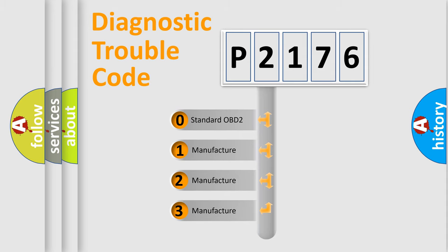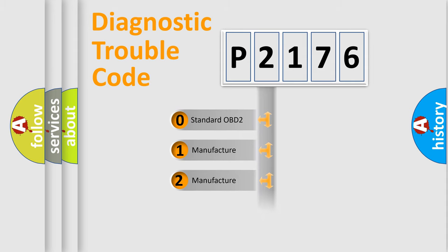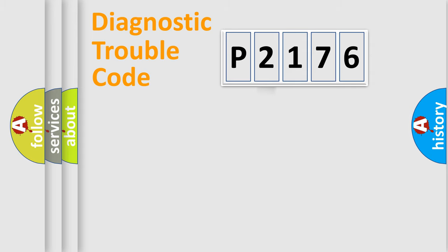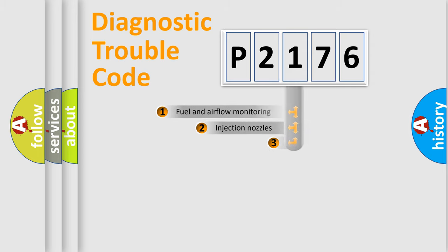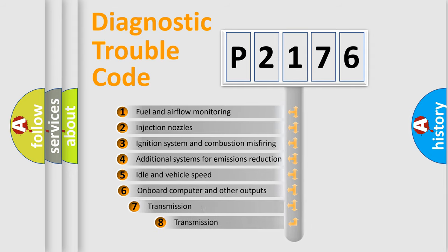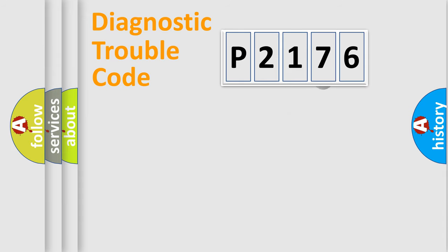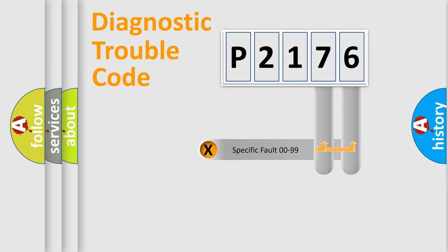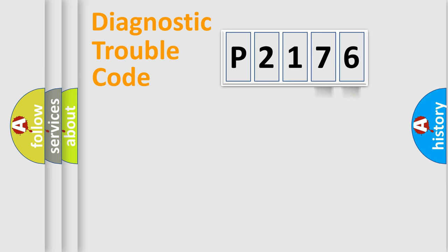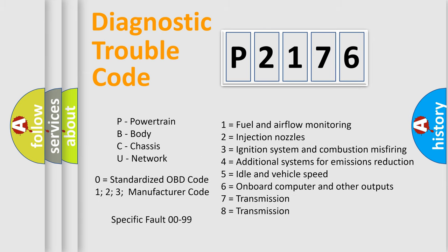If the second character is expressed as zero, it is a standardized error. In the case of numbers 1, 2, or 3, it is a more specific expression of a car-specific error. The third character specifies a subset of errors. The distribution shown is valid only for the standardized DTC code. Only the last two characters define the specific fault of the group, and such a division is valid only if the second character code is expressed by the number zero.